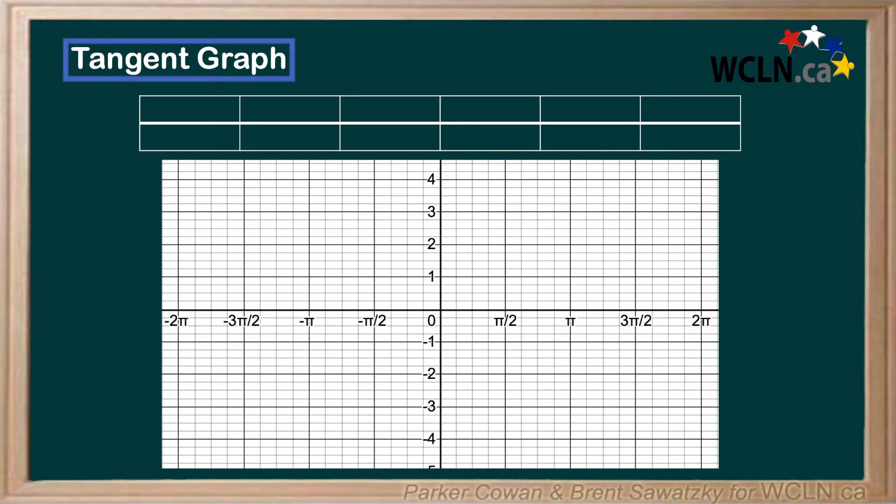Well, let's make a table of values using our calculator and the tan function in order to get a better idea of what this function looks like. From our investigation of the unit circle, we already know the points at 0, pi over 2, pi, and 3 pi over 2. So, let's fill those in.